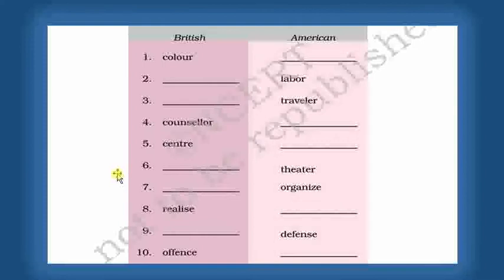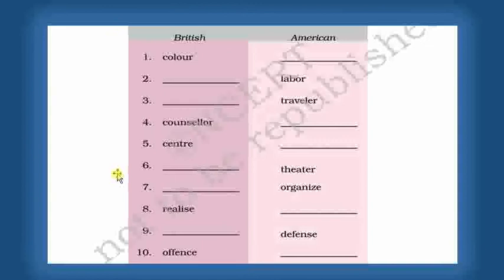The next word is Organise: in American English it is O-R-G-A-N-I-Z-E. In British English it is O-R-G-A-N-I-S-E, ending in S-E. The next word is Realise: R-E-A-L-I-Z-E. American English uses a Z, while British English also uses Z-E here.